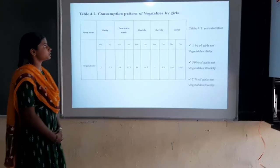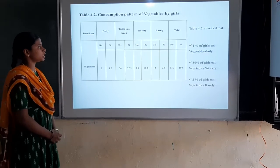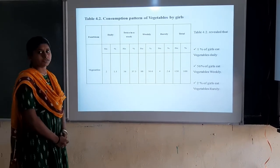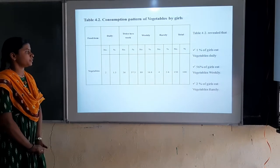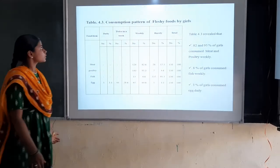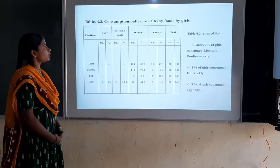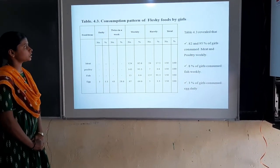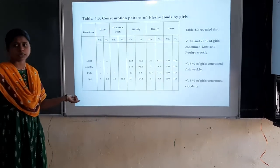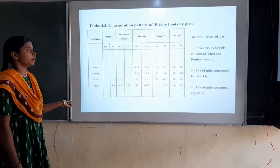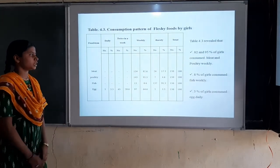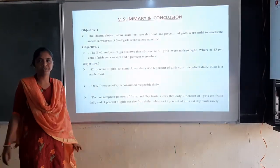Regarding consumption of vegetables by girls: 56% of girls eat vegetables weekly, and 2% of girls eat vegetables daily. Regarding consumption of fresh foods: 82% and 95% of girls consumed meat and poultry weekly, 8% of girls consumed fish weekly, and 3% of girls consumed eggs daily.